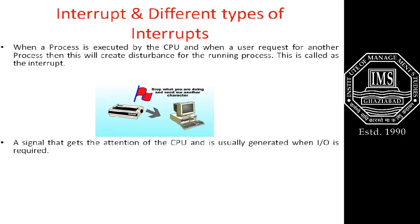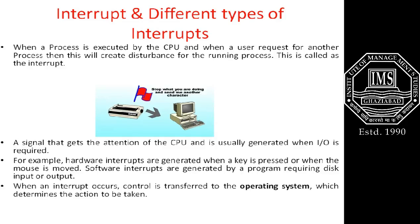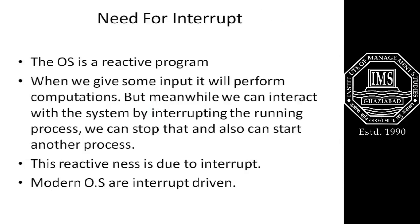In other words, an interrupt is a signal that gets the attention of the CPU, usually generated when input or output is required. For example, hardware interrupts are generated when a key is pressed or when the mouse is moved. Software interrupts are generated by a program requiring disk input or output. When an interrupt occurs, control of the processor is transferred to the OS, which determines the action to be taken.